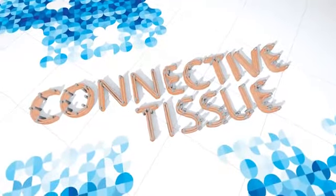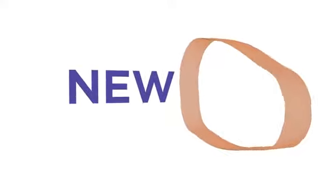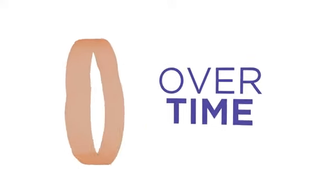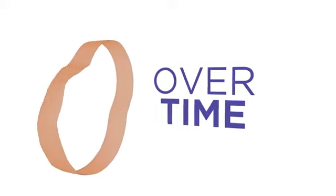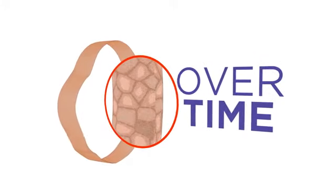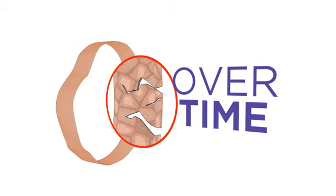Connective tissue is a lot like a rubber band. When a rubber band is new, it can be stretched without damage and bounces back to its original shape. Over time, you'll notice it doesn't stretch as well and loses its shape. Look closer and you'll see it's dry, cracked and ready to snap.